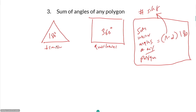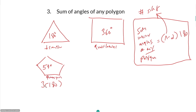We can check this: for triangles (3 sides), 3 minus 2 times 180 equals 180 — that works. For a quadrilateral, 4 minus 2 times 180 equals 360. For a pentagon (5 sides), 5 minus 2 times 180 equals 540. The sum goes up by 180 every time you add a side. You can use this formula for any polygon — even one with 52 sides.